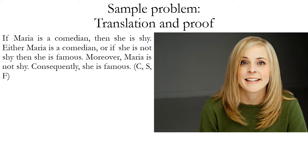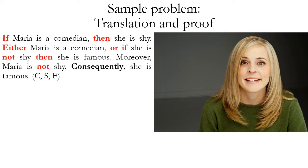We begin by identifying the main conclusion. The word 'consequently' is the conclusion indicator, so 'she is famous' is the main conclusion. Now let's identify the logical operator terms. The first sentence has if/then — a conditional. The second sentence has 'either...or' — a disjunction. After the 'or' there's another if/then conditional, plus a 'not' that negates the antecedent of that conditional. Sentence three also has a 'not,' giving another negation.